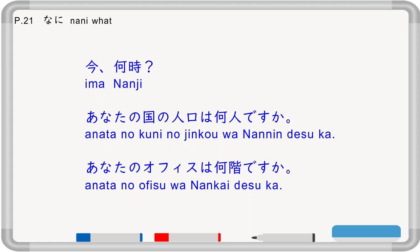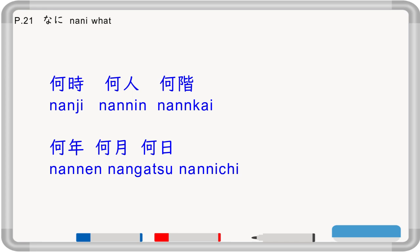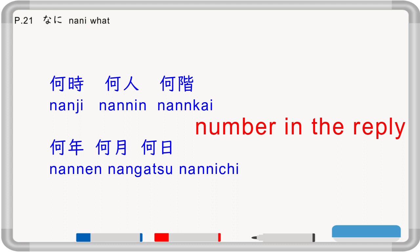Other uses of nan: 'Ima nanji?' — what time is it now? 'Anata no kuni no jinkou wa nan nin desu ka?' — jinkou is population; nan nin means how many people — so 'how many people is your country's population?' 'Anata no ofisu wa nan kai desu ka?' — nan kai means what floor or which floor. Words like nanji, nan nin, nan kai, nan nen, nan gatsu, nan nichi always require a number in the answer.